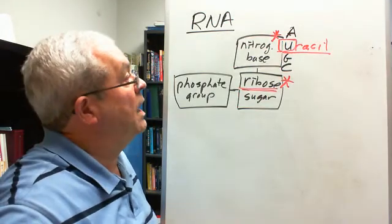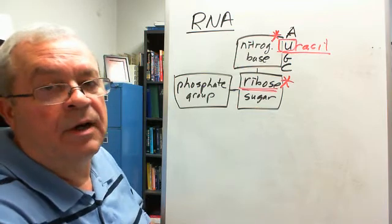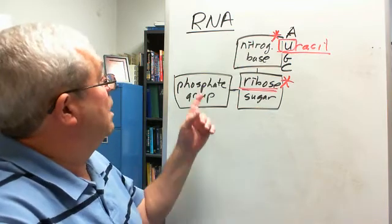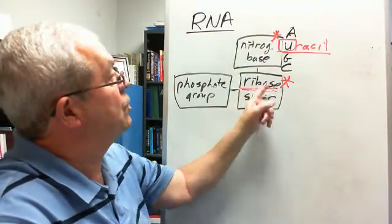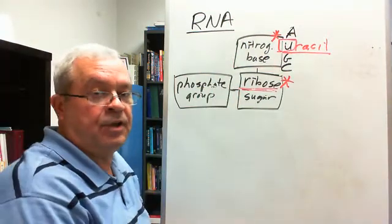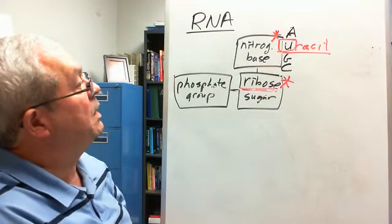So A-U-G-C. So how many nucleotides, RNA nucleotides are there? Phosphate sugar A, phosphate sugar U, phosphate sugar G, phosphate sugar C. Four nucleotides, just as in DNA, with one of them being different.